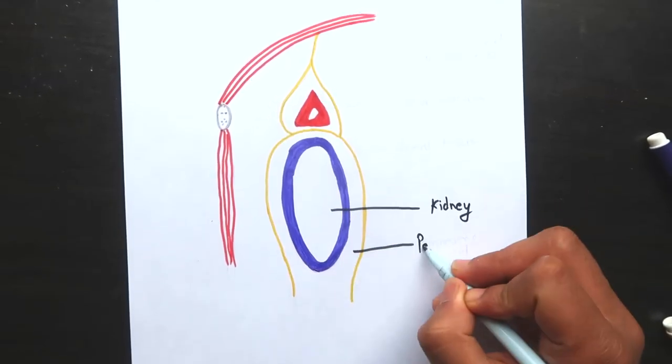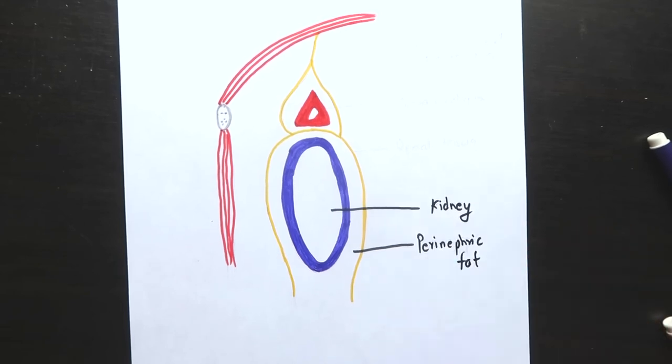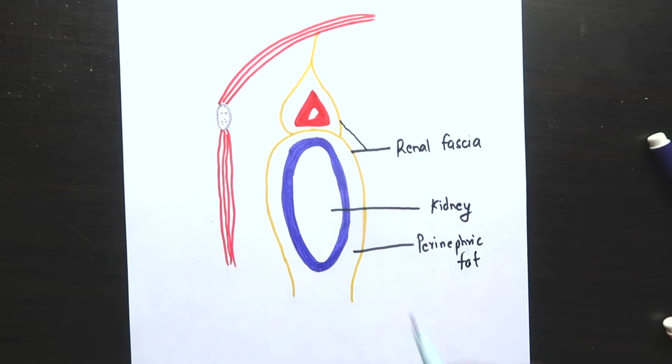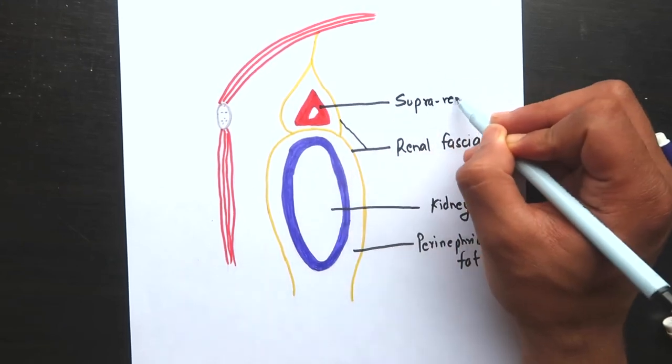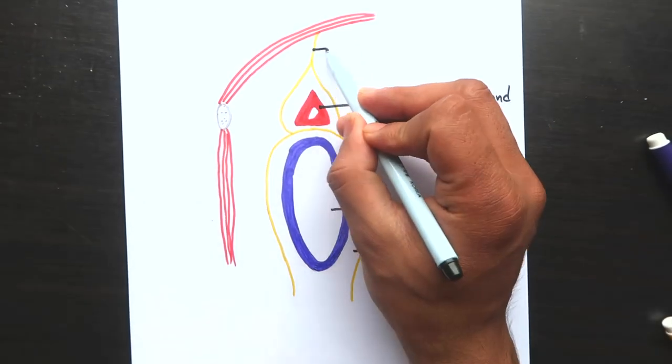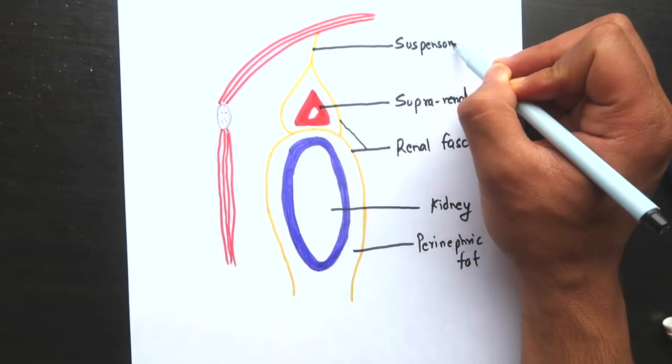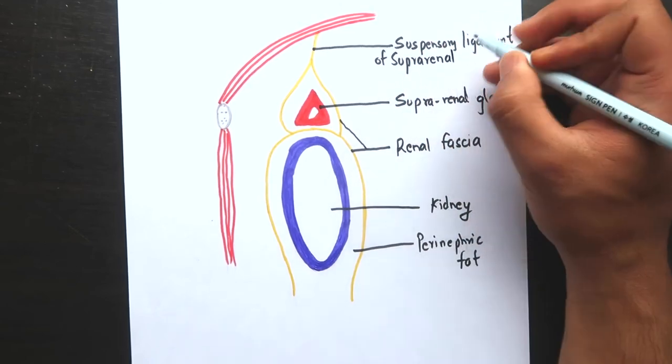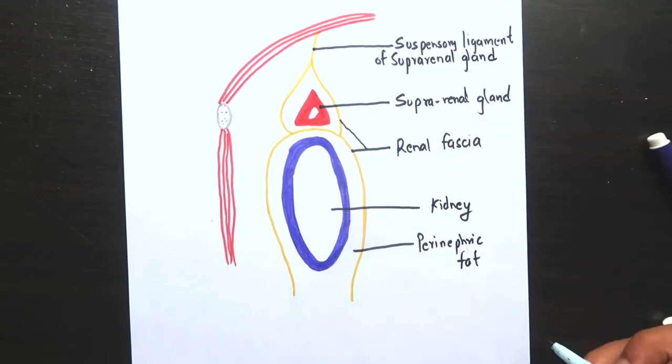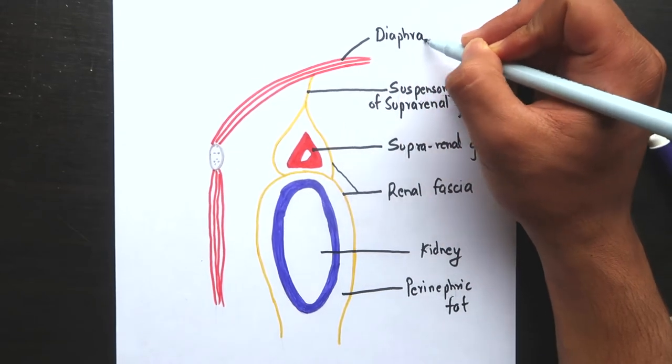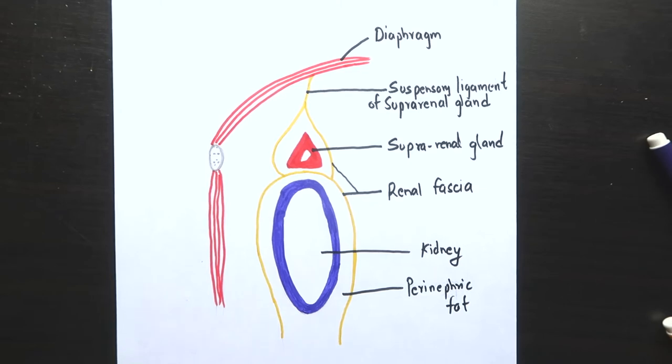Posterior layer on the medial side fuses with the fascia of psoas major that is attached to the vertebra. To know the vertical extension of the renal fascia, I have drawn the sagittal section of the kidney here. The renal fascia fuses above the upper pole of the kidney before splitting into two. It covers up the suprarenal gland and again fuses to continue as suspensory ligament of suprarenal gland. The suspensory ligament then gets fused to the diaphragmatic fascia.